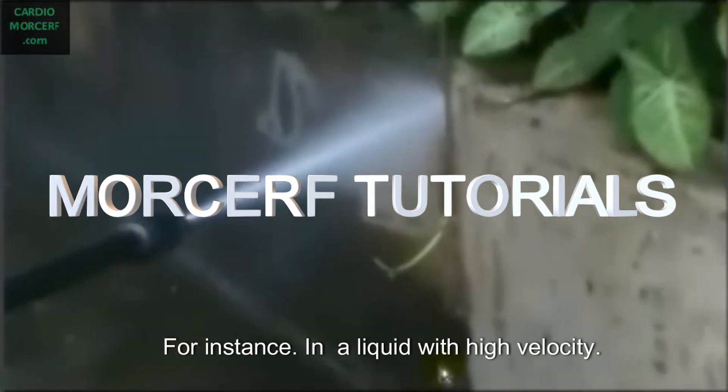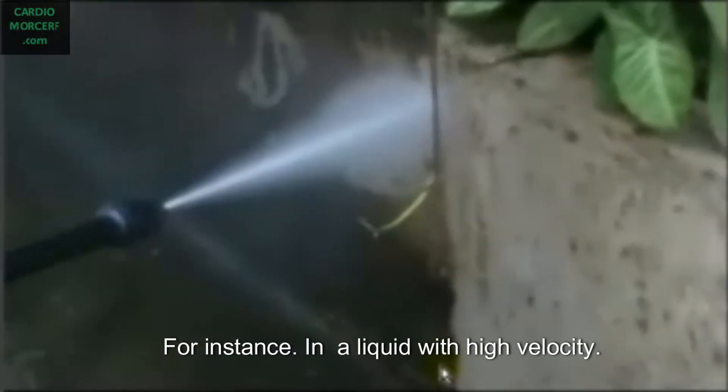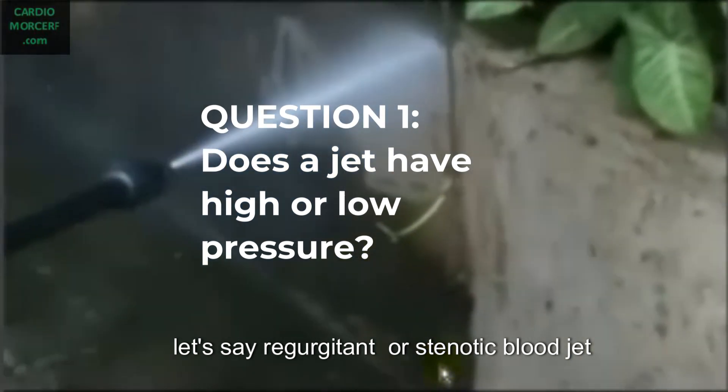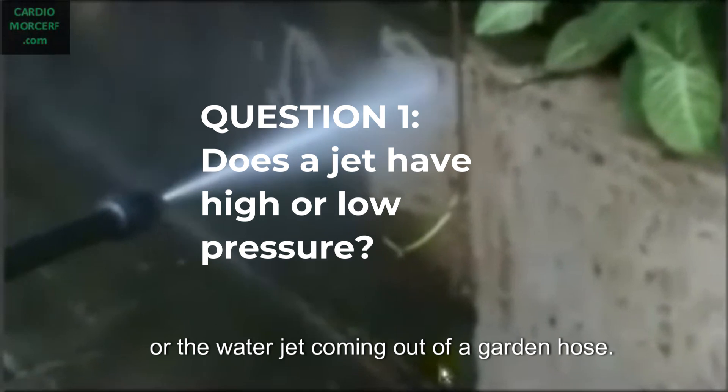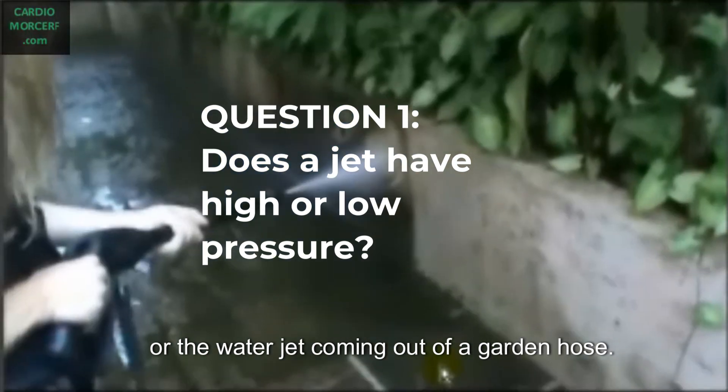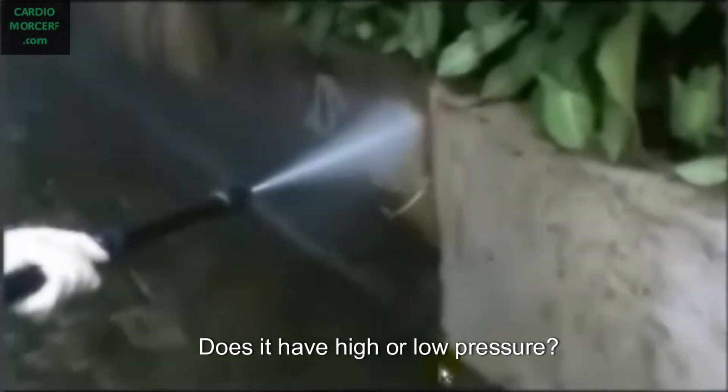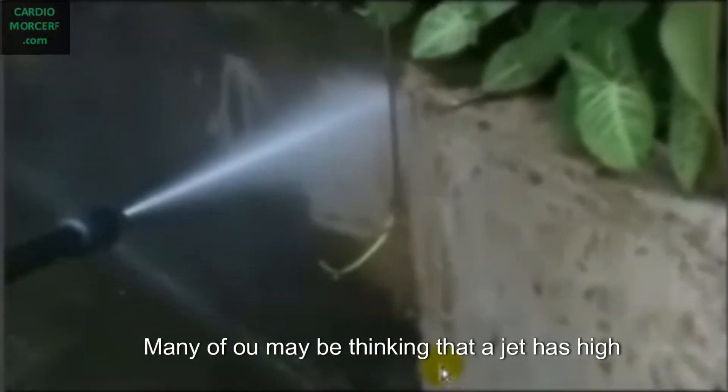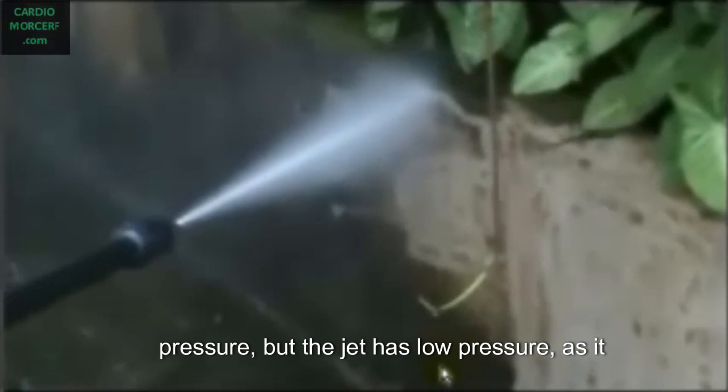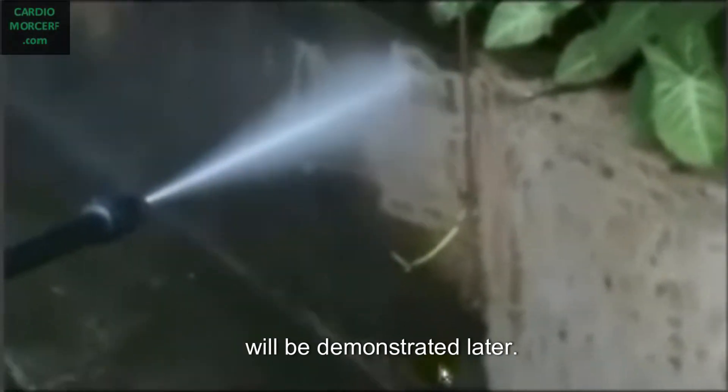For instance, a liquid with high velocity, let's say a regurgitant or stenotic blood jet, or the water jet coming out of a garden hose. Does it have high or low pressure? Many of you may be thinking that a jet has high pressure, but the jet has low pressure, as it will be demonstrated later.